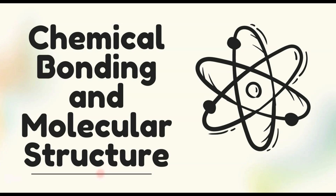Hello everyone. We are discussing the back exercise questions of the chapter Chemical Bonding and Molecular Structure, and today we will discuss question number 25. The question is: describe the change in hybridization, if any, of the aluminium atom in the following reaction — AlCl3 + Cl⁻ → AlCl4⁻. We need to explain the change in hybridization of aluminium.